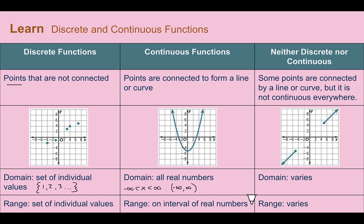If it's neither discrete nor continuous, you're going to have a combination of the two. Sometimes you might have points, sometimes parts of lines, but it's not one continuous line throughout. For example, we have a line, but then it stops, and then there's nothing, and then we have a line again — the line did not continue throughout. So this would not be either discrete or continuous. The domain and range on those are going to vary based on where the lines and points are.